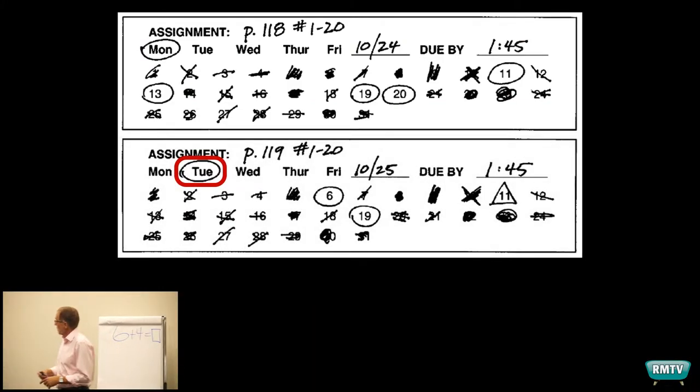Alright, it's Tuesday. Tuesday rolls around. I check at 1:45. Two kids weren't finished. Fabian number 11 is... if you said or thought absent, you're correct. It's absent.